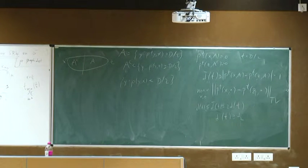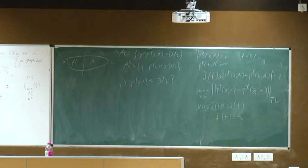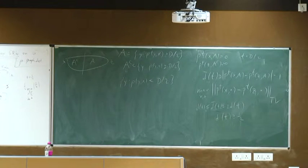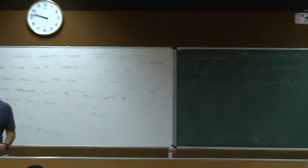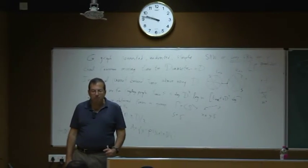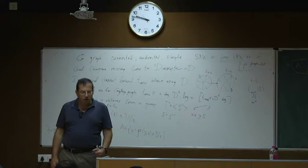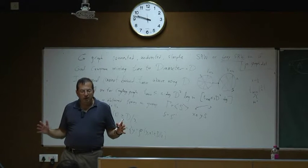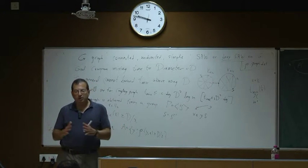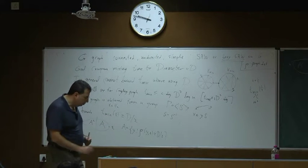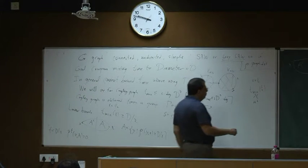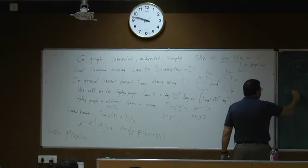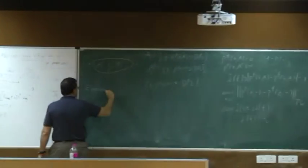We can use essentially the same picture together with the Varopoulos-Carne bound to get something better. This trivial lower bound is sometimes sharp; one example is expander graphs. Expander graphs are graphs of bounded degree where the relaxation time is order 1 — in other words, there is a spectral gap.